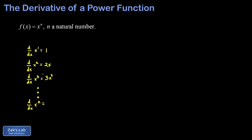It's a little tricky to see a pattern here, but there is one emerging. The number that was in the exponent ends up out in front of the result, and the exponent on x is reduced by one. For the x cubed case, we move the three out in front and subtract one from the exponent. The same is true for x squared. It even works for n equals 1, putting a one in front and subtracting to get x to the zero, which equals one. So it looks like the pattern generalizes: the derivative of x to the n is n times x to the n minus one — though I'll put a question mark on that since it's not yet a proof.